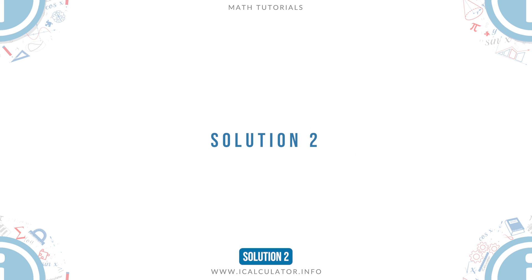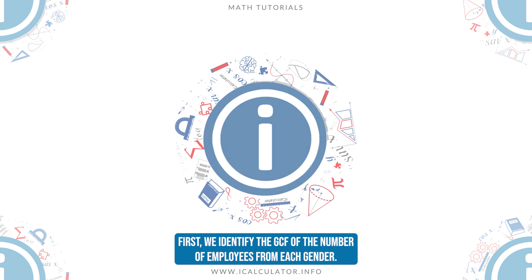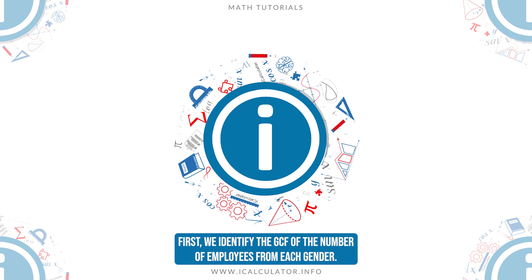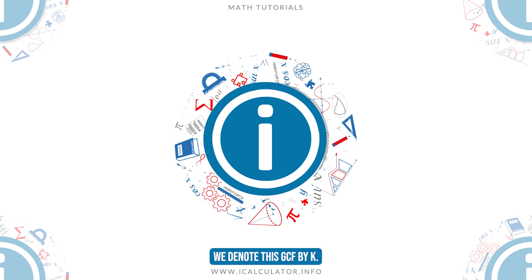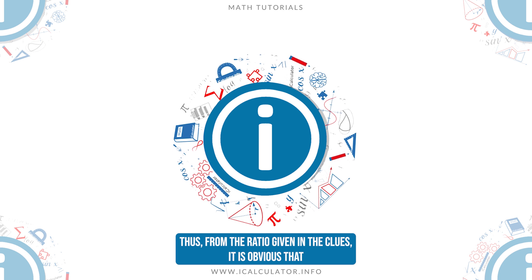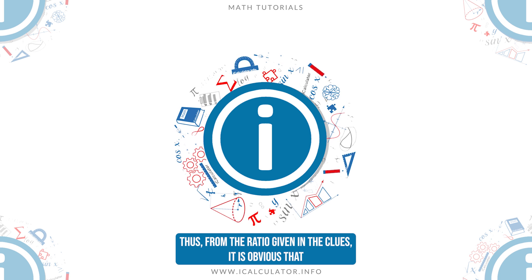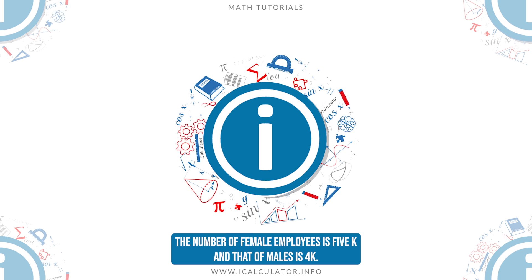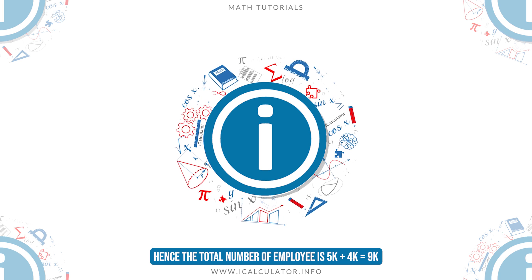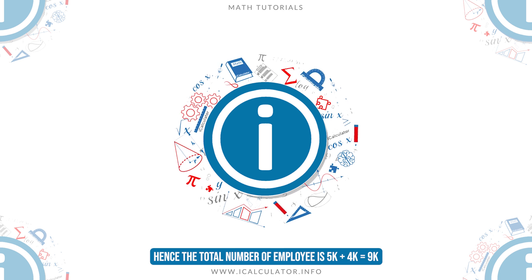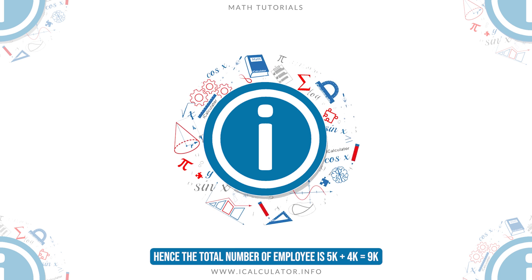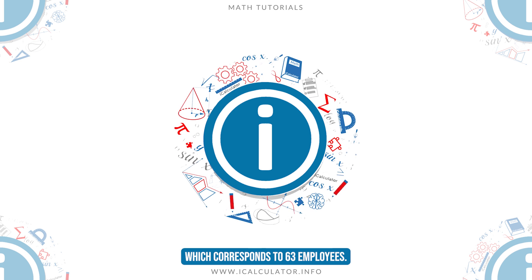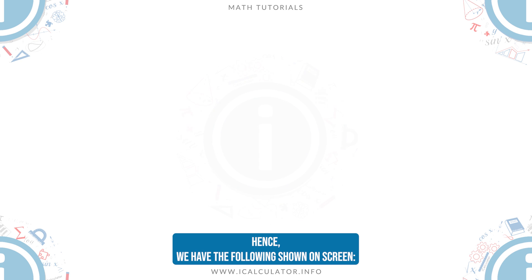Solution 2. First, we identify the GCF of the number of employees from each gender. We denote this GCF by K. Thus, from the ratio given in the clues, it is obvious that the number of female employees is 5K and that of males is 4K. Hence, the total number of employees is 5K plus 4K equals 9K, which corresponds to 63 employees. Hence, we have the following shown on screen.